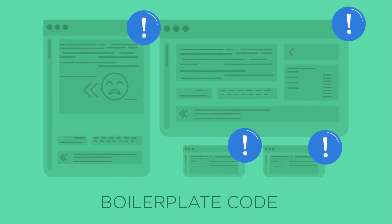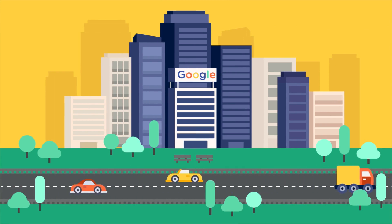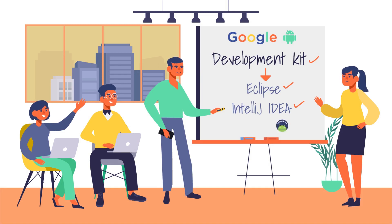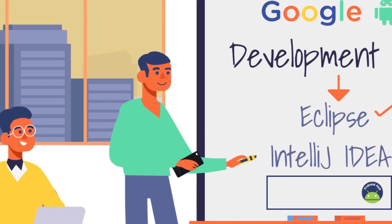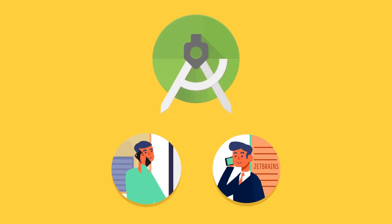So that was one problem. Parallelly, things looked like this at Google. Google provided the development kit for Android which could be used in already existing IDEs like Eclipse and IntelliJ IDEA. But then, Google thought of having an IDE especially designed for creating Android apps. For this, Google contacted JetBrains, the company which had created IntelliJ IDEA, and together they built Android Studio in 2012.